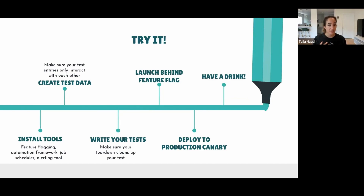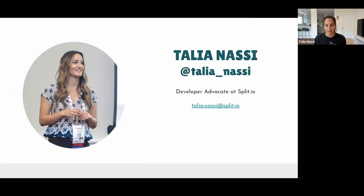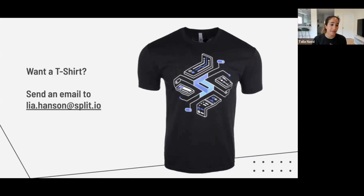To get to testing in production, the steps are: install your tools, create your test data, write your tests, launch your tests behind a feature flag, deploy to a production canary, and then have a drink. The two key takeaways are: no one cares if your feature is working in staging — we care if it works in production. And the only way to know if it's working in production is to test it in production. You can email or tweet me with questions, and if you want a t-shirt, email leahansen@split.io.